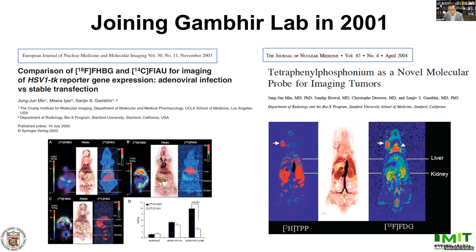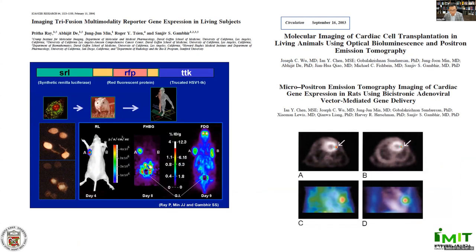I was involved in many interesting projects at that time, such as HSV1-TK reporter gene imaging studies using different kinds of reporter probes — FHBG and FIAU — or the development of novel molecular imaging for cancers using phosphonium salt. I was also involved in the tri-fusion gene construction project with Dr. Prisaray and Abhijit De, using synthetic Renilla red fluorescent protein and truncated TK, and also involved in the cardiac molecular imaging project with Dr. Joseph Wu and Ian Chen. All of these works provided me insight in molecular imaging using optical and PET imaging.